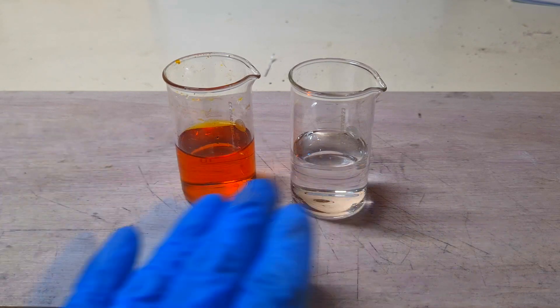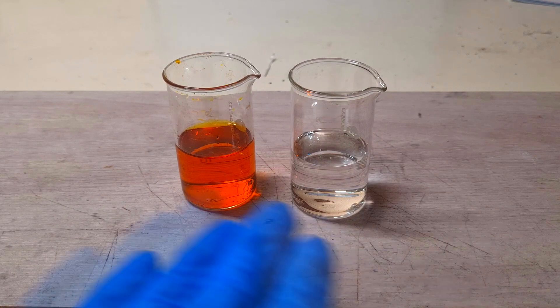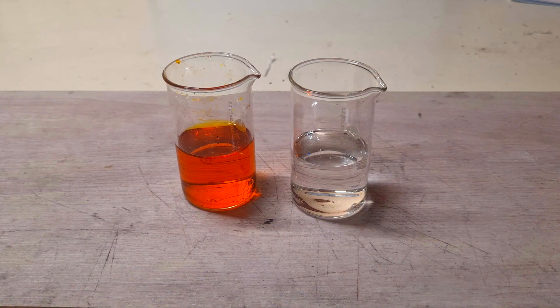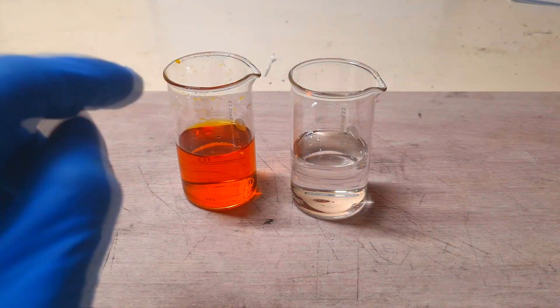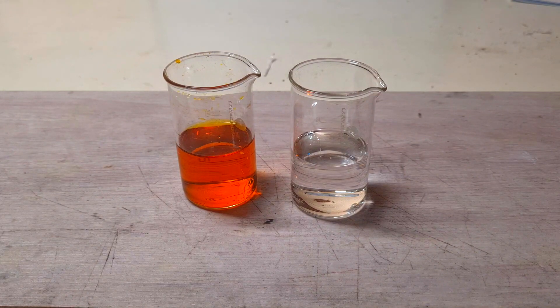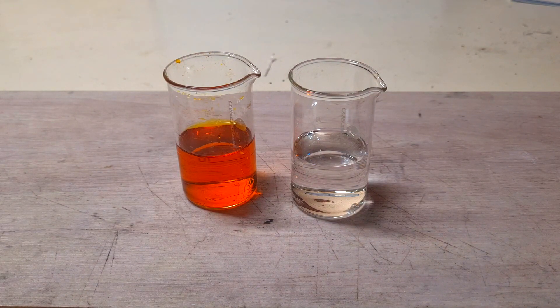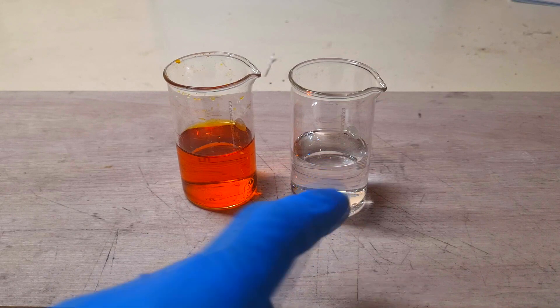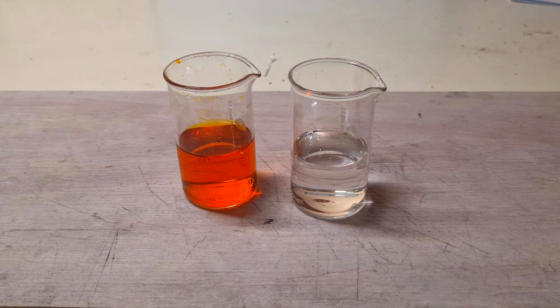So here I have two beakers, each beaker is filled with some solution. In this beaker I have 25 ml of one mole of iron 3 chloride, and in this beaker I have also 25 ml of one mole of potassium iodide.